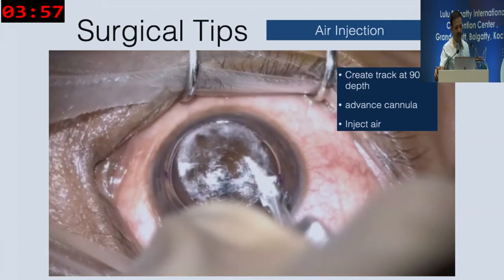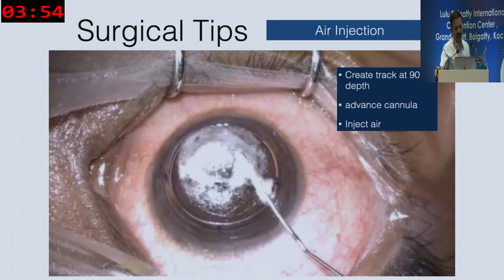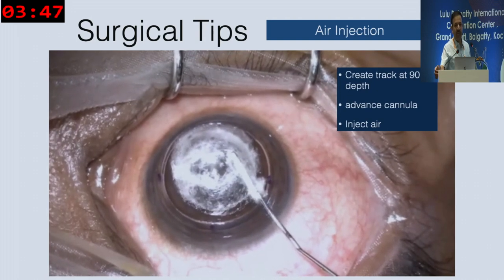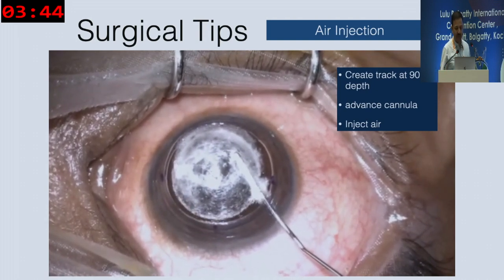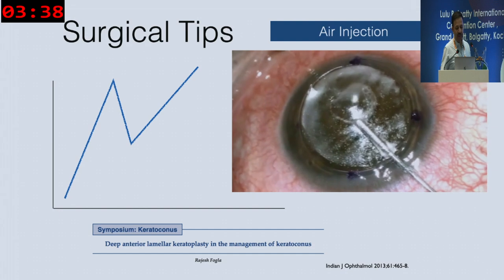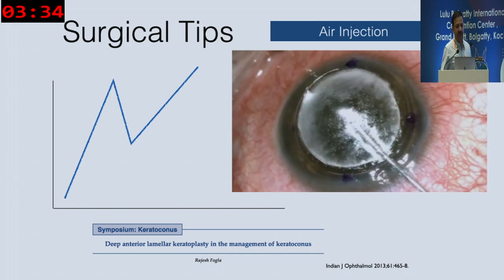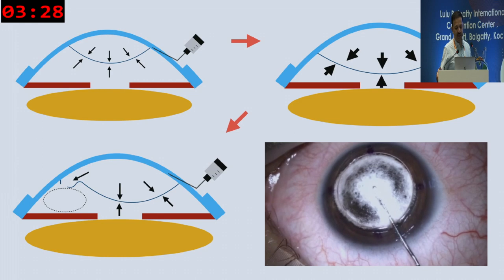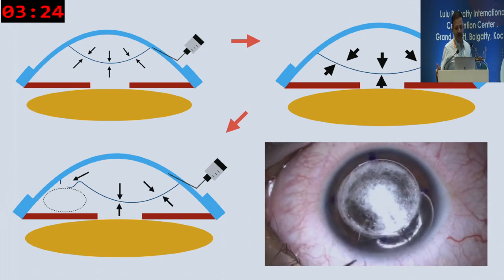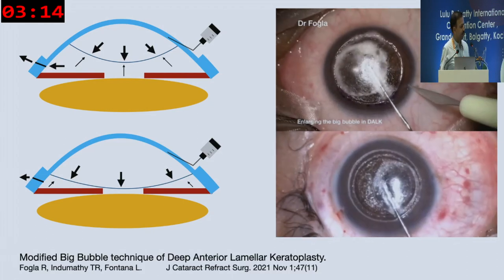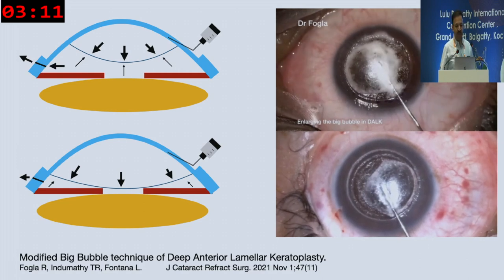For big bubble DALK, after trephination I like to debulk the anterior half of the cornea, then we go ahead with the cannula placed at about 80–85% depth. You inject air and get whitening of the cornea — the big bubble appears with a dense white frothy margin, starts from the center and expands to the periphery to a diameter of about 8–8.5 mm. You feel initial resistance, then a give-away sensation, then resistance builds again. I prefer sequential air injection: initiate the bubble, then do a paracentesis to release aqueous so counter-pressure is minimized, then expand the bubble to desired size.